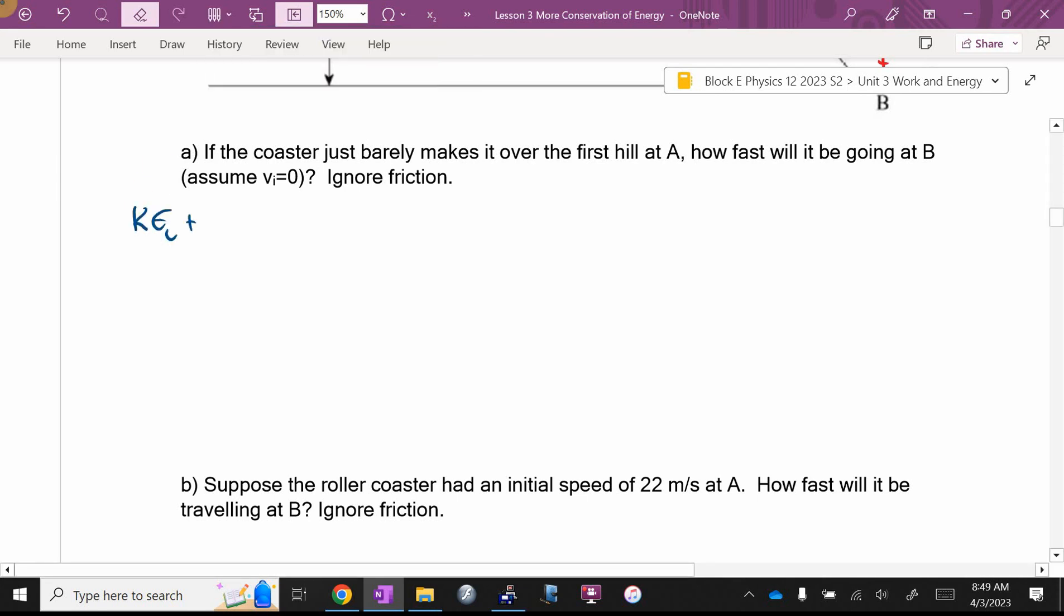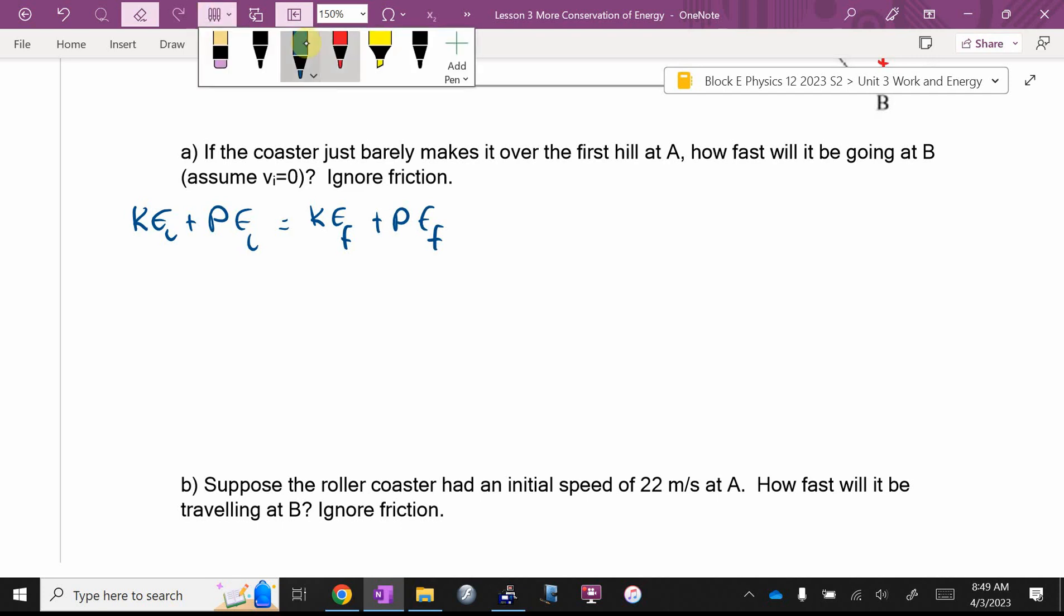Roller coaster below has a mass of 255 kilograms. If it just barely makes it over the first hill at location A, how fast will it be going at location B? So I think what I'm going to do is I'm going to let initial B right here and final B right here. And I'm pretty sure, Hannah, I'm seeing a change in height and a change in speed and a yucky, curvy path. This is going to be conservation of energy. It's going to be initial plus initial equals final plus final. And it says ignore friction, so no heat. Hannah, are any of these zeros?